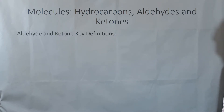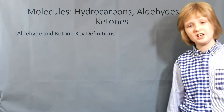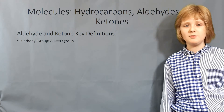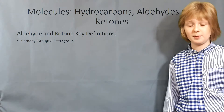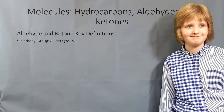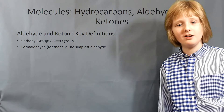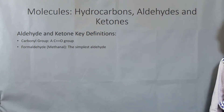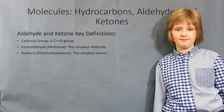Aldehydes and ketones are what we're going to look at next. Here are some key definitions. We've got a carbonyl group, which is a carbon-to-oxygen double bond group. A formaldehyde or methanol is the simplest aldehyde. Acetone or ethylmethyl ketone is the simplest ketone.